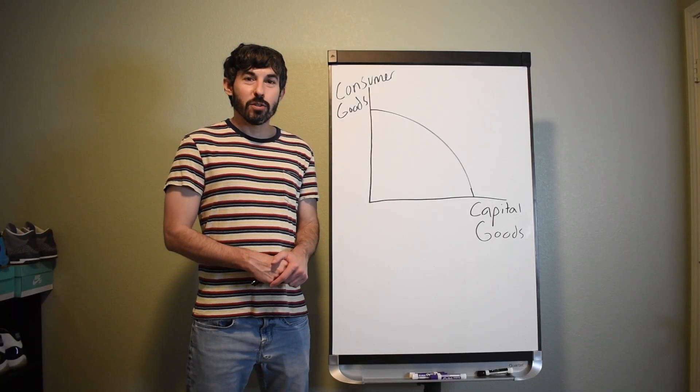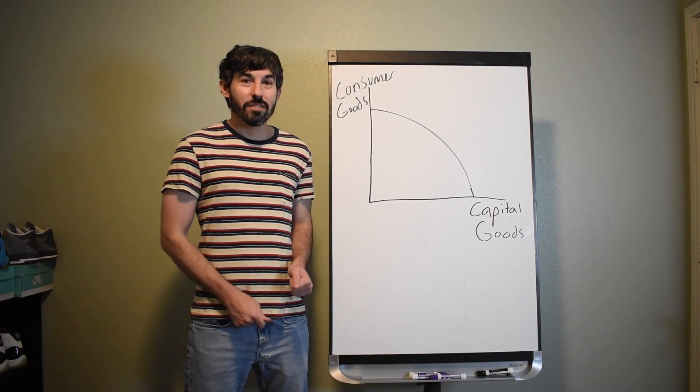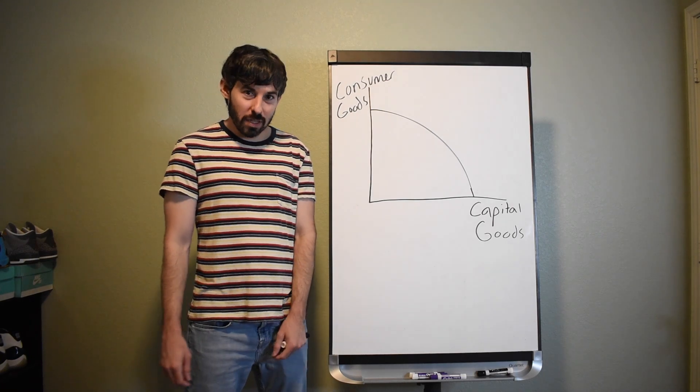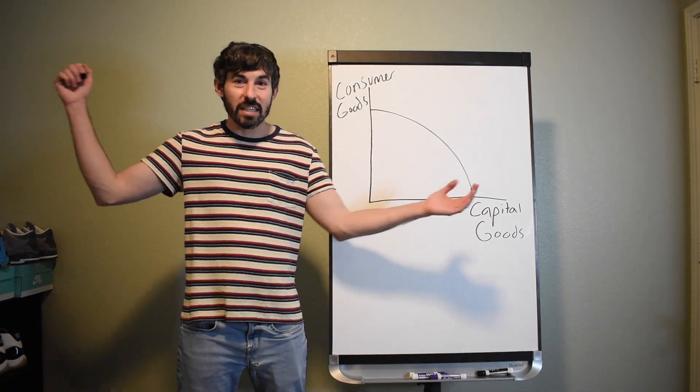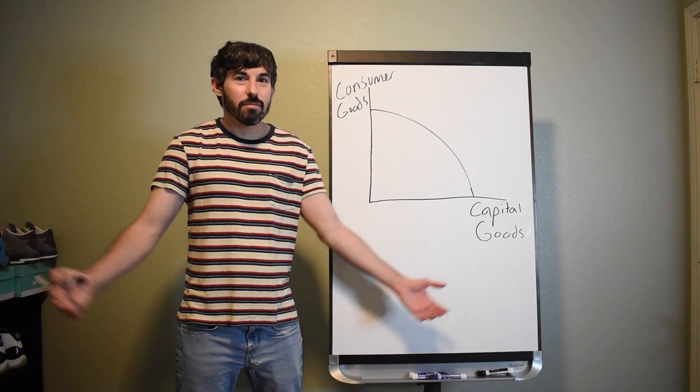All right, welcome back to AP Macroeconomics with your favorite teacher, me, Mr. Fritz. Today we're going to do the production possibility curve. It's the beginning of the year again. It's school time.